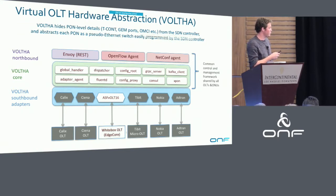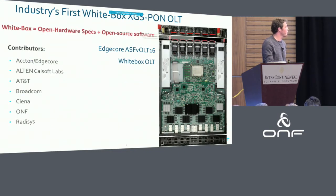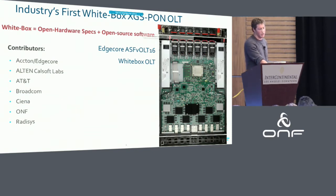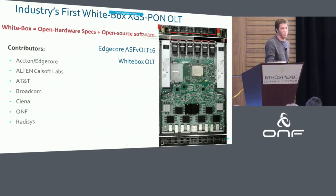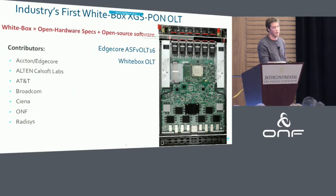We've highlighted a bunch of different OLT vendor adapters. One adapter is called ASFVolt16, which is an adapter for the industry's first white box XGS-PON OLT. This new OLT device has been built based on merchant silicon from Broadcom — specifically the Maple OLT chipset, which supports XGS-PON and other kinds of PON. XGS-PON is a 10 gigabit symmetric PON — 10 gigabits upstream and downstream.